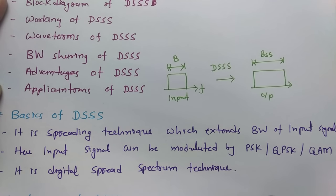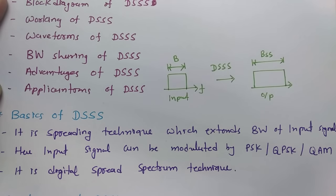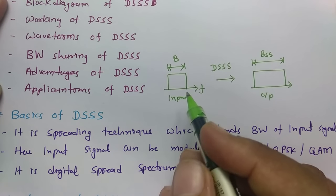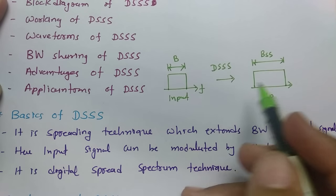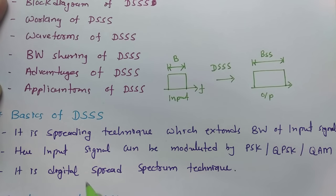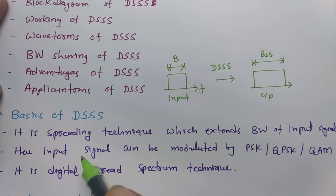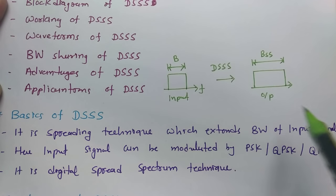Frequency Hopping Spread Spectrum was an analog spread spectrum method, while DSSS is a digital spread spectrum technique. The agenda is the same — in spread spectrum we increase the bandwidth of the input signal — but in DSSS we use a digital technique. The modulating signal can be PSK, QPSK, or QAM, and the agenda is to increase bandwidth.